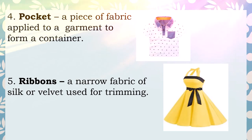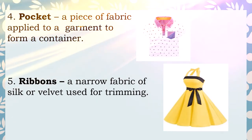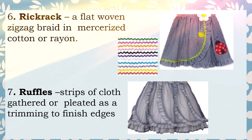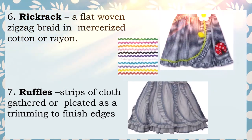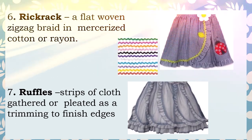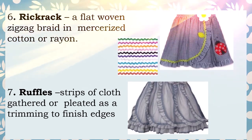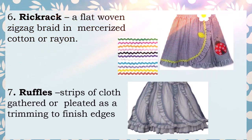Number five is ribbons — a narrow fabric of silk or velvet used for trimmings. Number seven is ruffles — strips of cloth that are gathered and attached as trimmings along the thinnest edges of a garment.